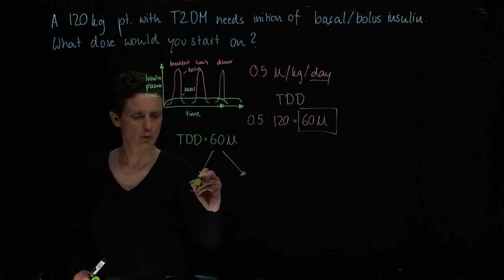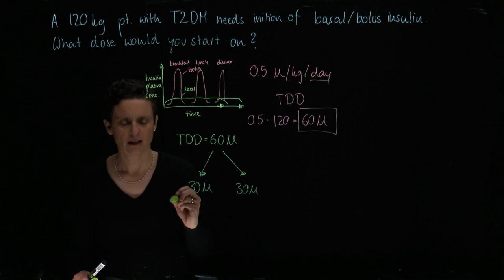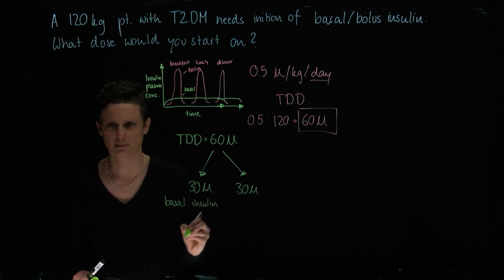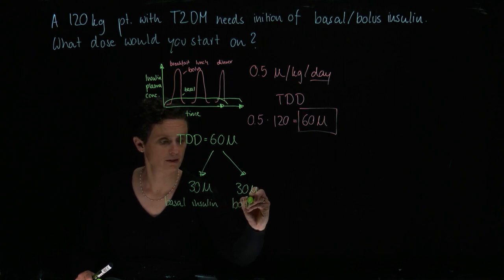And the 30 is going to be for our basal insulin. So we want 30 units basal insulin, and then we want to have 30 units bolus insulin.